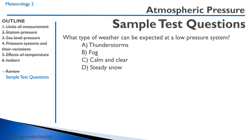What type of weather can be expected at a low pressure system? Remember, a low pressure system has convergence and updrafts — unstable air. So A, thunderstorms — yes, you're going to see thunderstorms. B, fog — no, not usually; fog is when the air is very stable. C, clear — that's usually a high pressure system. D, steady snow — no, not usually. The correct answer is A, thunderstorms.